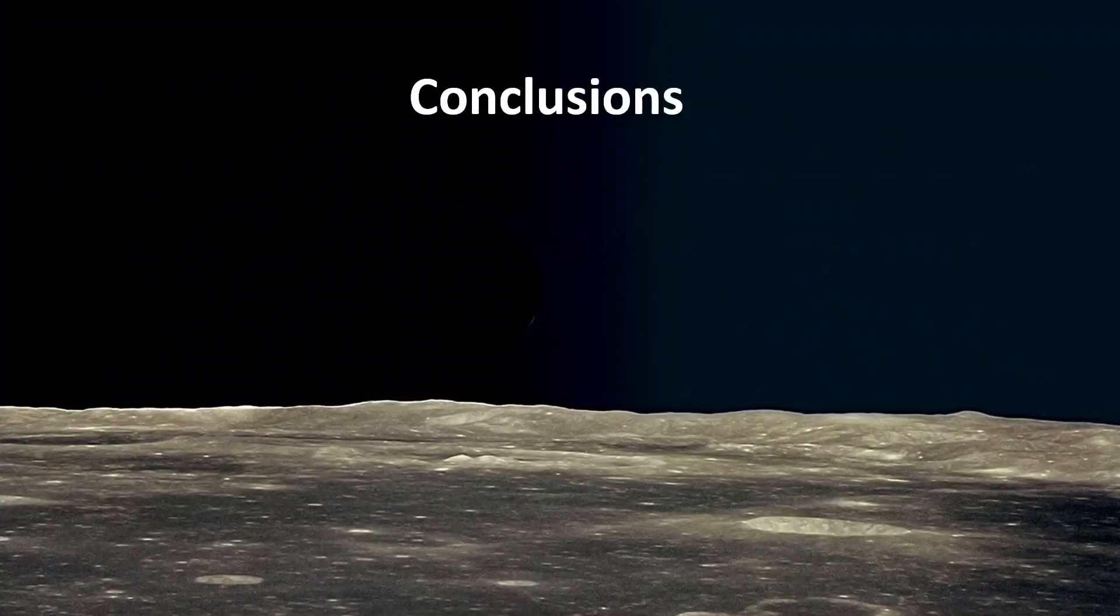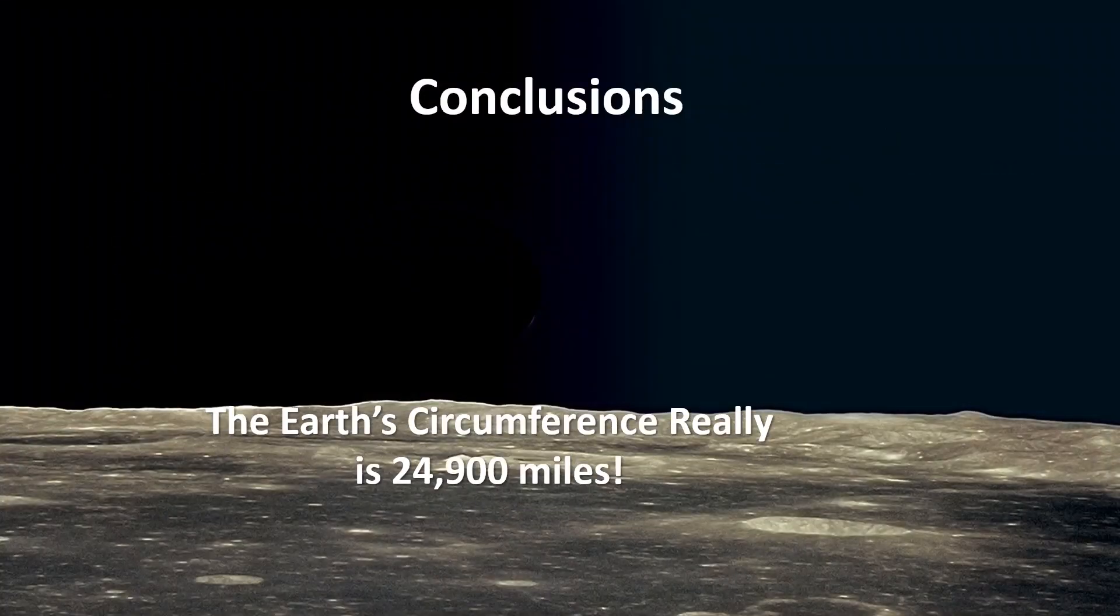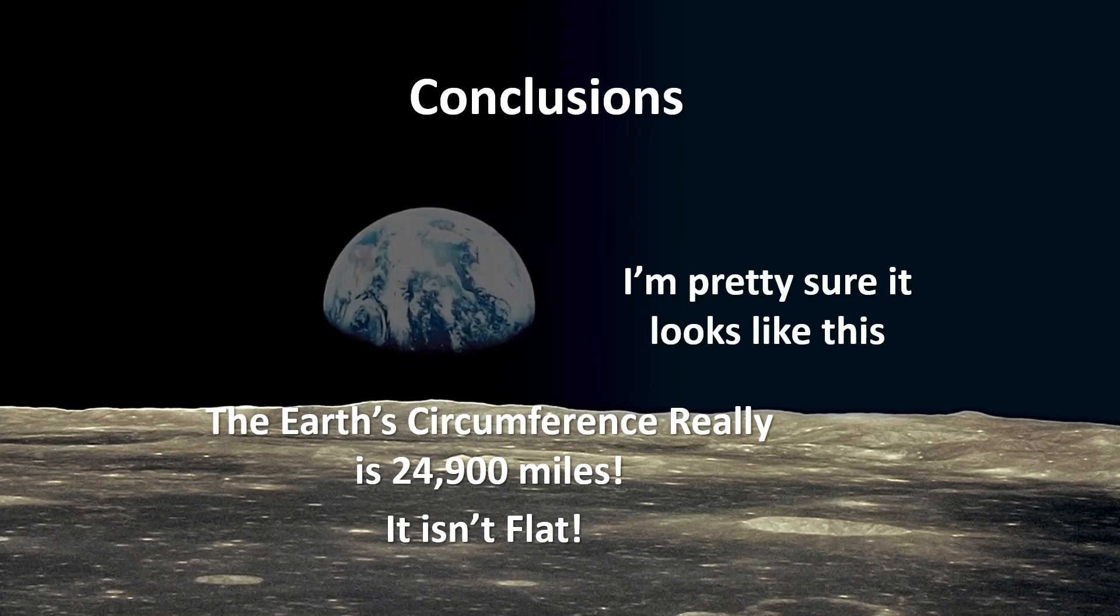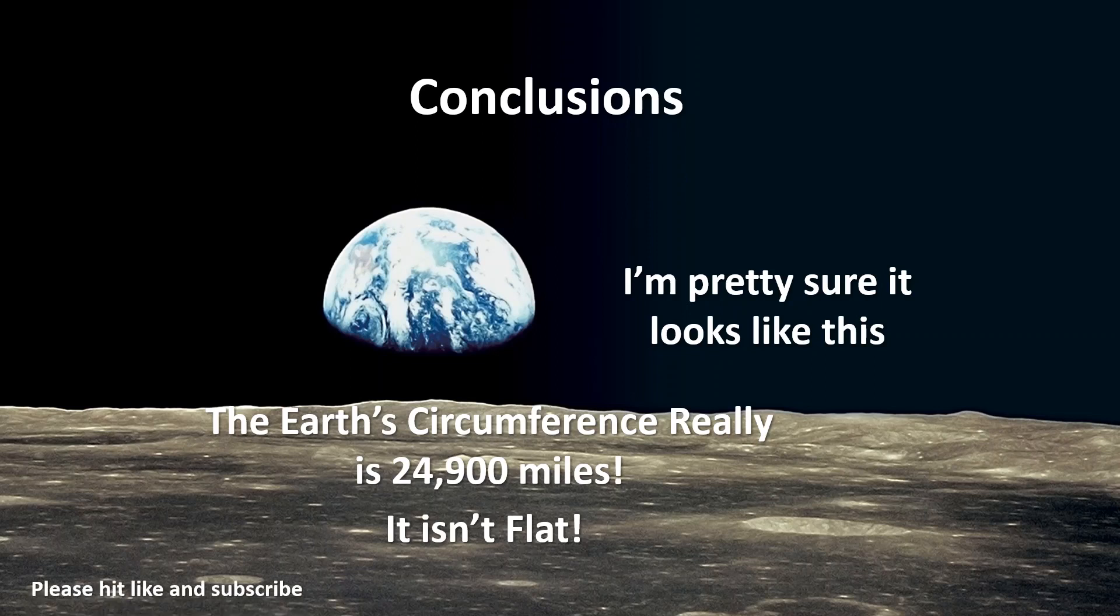So what do we conclude? Well, the earth is really 24,900 miles in circumference, just like you've always been told. It isn't flat. In fact, I'm pretty sure it looks just exactly like this. So there you have it, folks. Now, if you liked the video, and I hope you did, please hit like and subscribe. And I promise you'll see some more of these. So take care now.